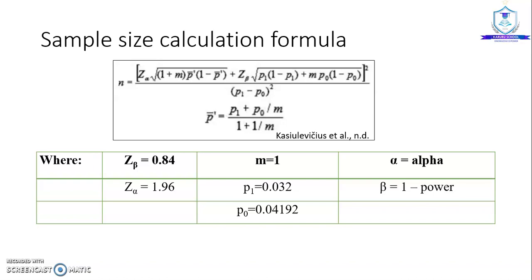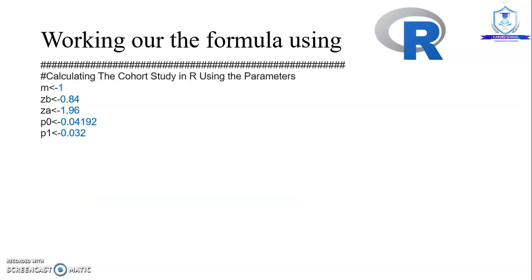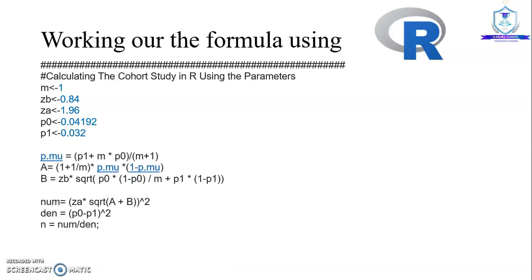Alpha was equal to alpha and beta was equal to 1 minus power. I did the calculation using R, where I fixed the values: m was equal to 1, z-beta was equal to 0.84, z-alpha was set to 1.96, p0 was set to 0.04192 and p1 was set to 0.032.